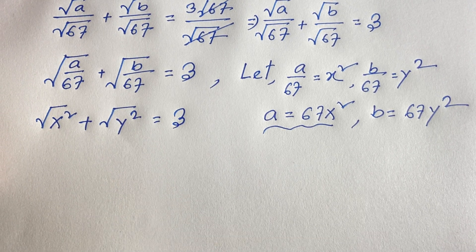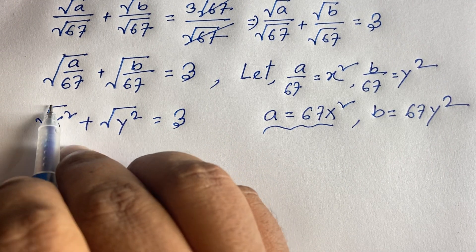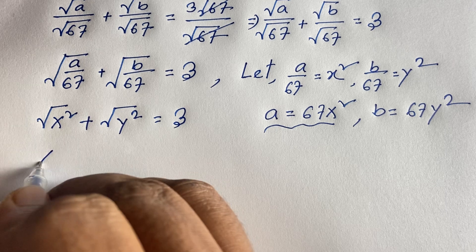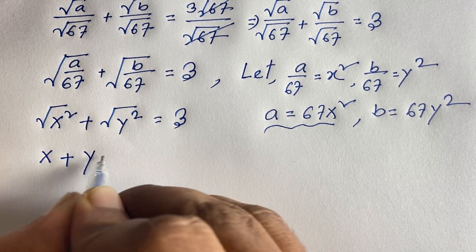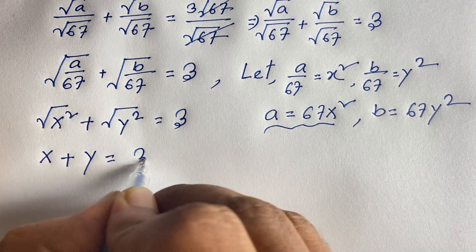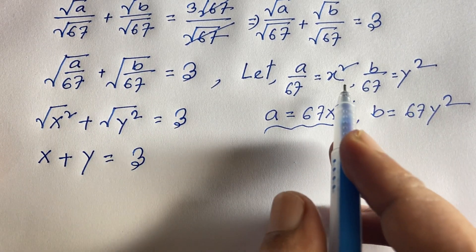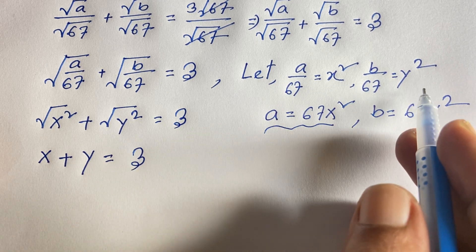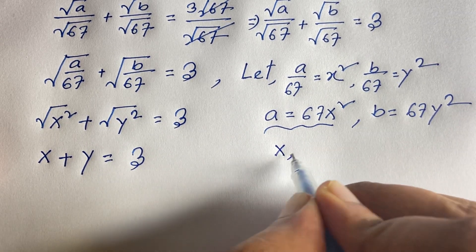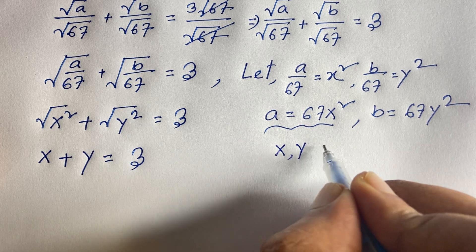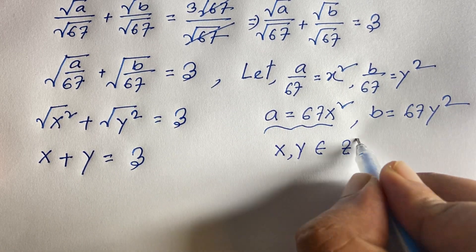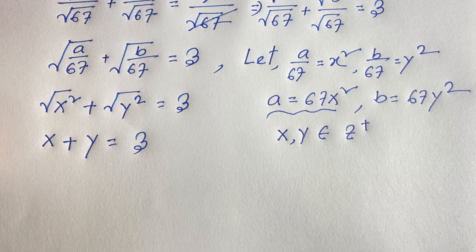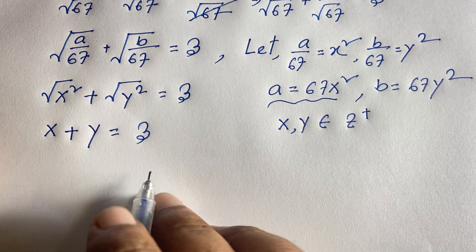The square roots cancel and we find x + y = 3. Remember that since a/67 = x² and b/67 = y², x and y are always positive integers in this context. So x + y = 3.